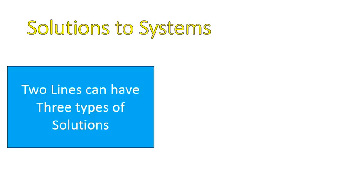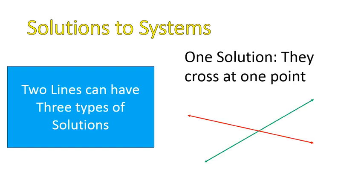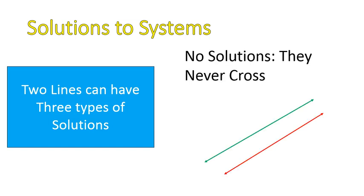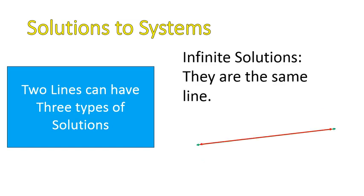Let's take a look at solutions to systems. Two lines can have three types of different solutions. You can have one solution if they cross at one point. You can have no solutions if they are parallel and they never cross. And you can have an infinite number of solutions if you have two lines set exactly on top of each other — two equations that are exactly the same line.